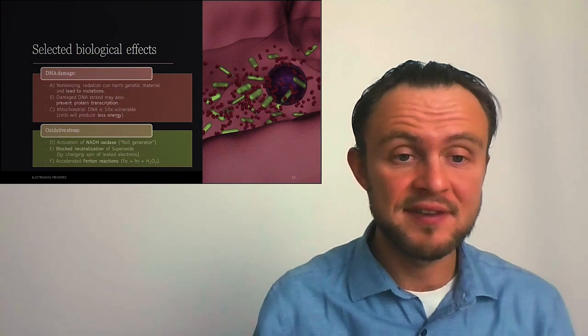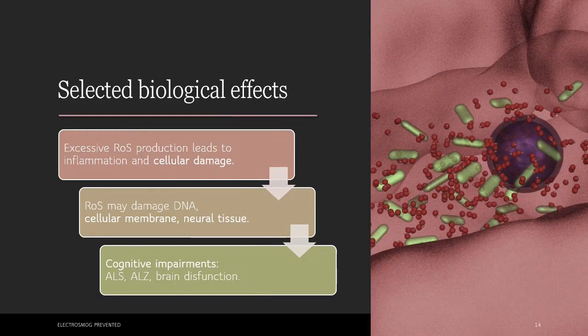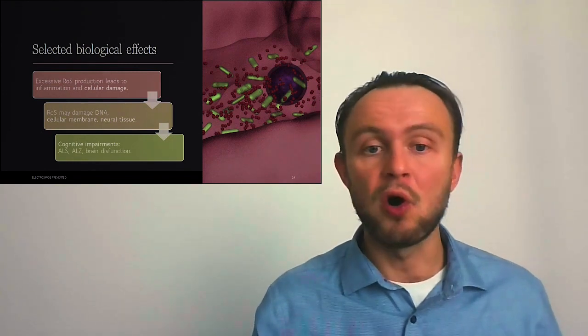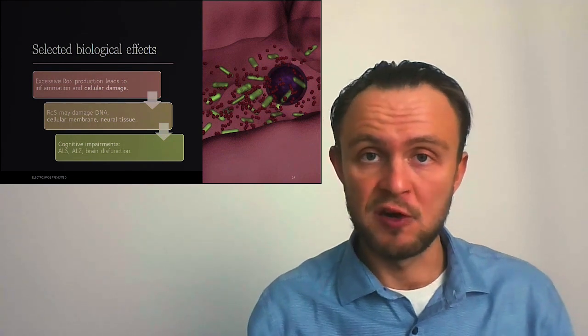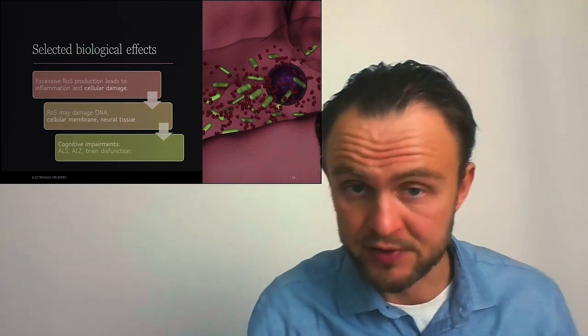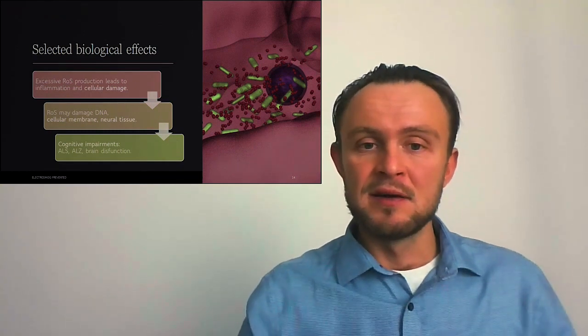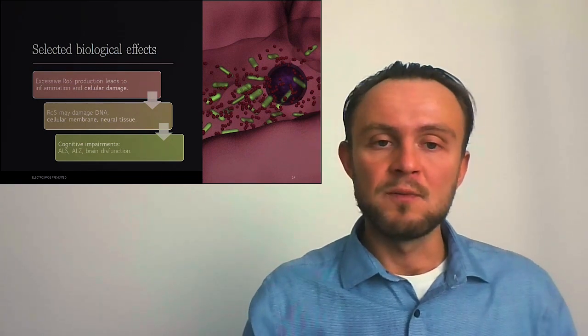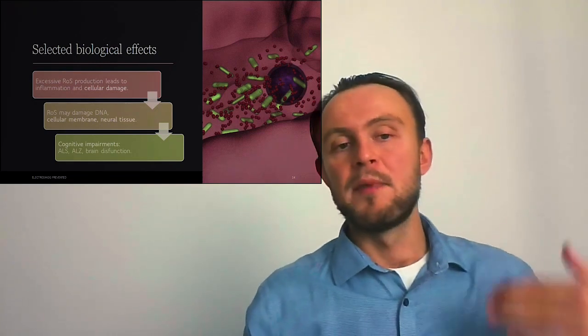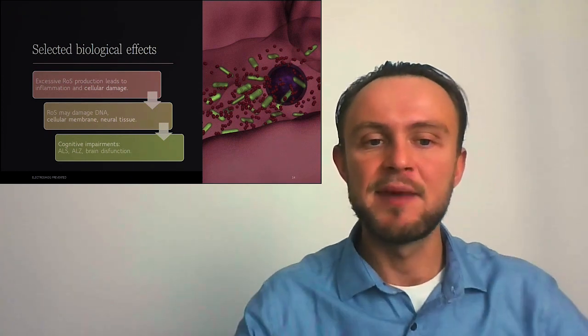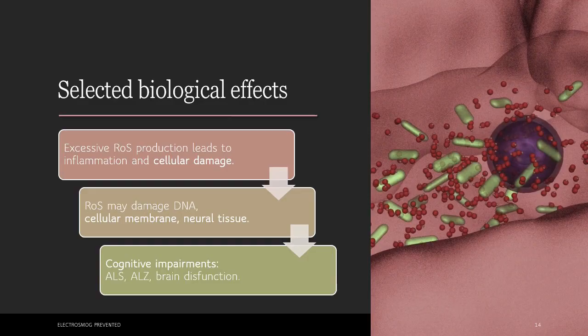Electromagnetic fields can also increase oxidative stress by many ways. We know that excessive reactive oxygen species production leads to inflammation and cellular damage. Free radicals may damage DNA, cellular membrane or neural tissue. Neural tissue is especially vulnerable because there is a lot of freely or loosely bound iron, there is less activity of antioxidants and neural tissue repairs very slowly. So prolonged exposure to electromagnetic fields may lead to excessive free radicals production and this may result in cognitive impairments, which may range from just forgetting things to brain dysfunction, but also increase symptoms of Alzheimer's disease or amyotrophic lateral sclerosis.